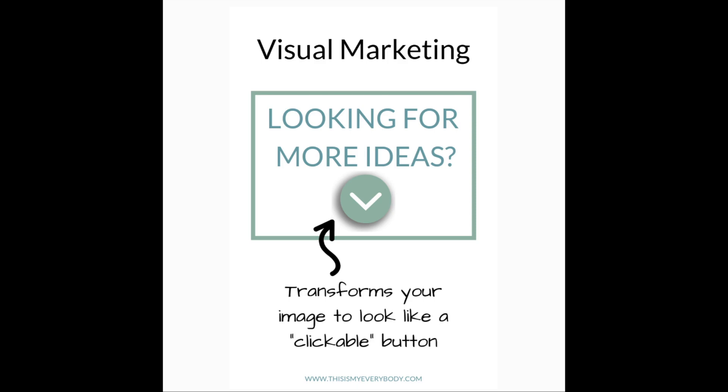Shadow effects can also make your icons or images look clickable. When you see a raised image, it organically communicates to your audience that it might be a button or a clickable image. The circled arrow icon here has an additional shadow effect which transforms it to look like a clickable button and encourages your audience to take action. Time tip: if you want raised images to support clickable action, make sure most of your shadowed images actually are clickable and lead to further information — your audience will learn to expect it.